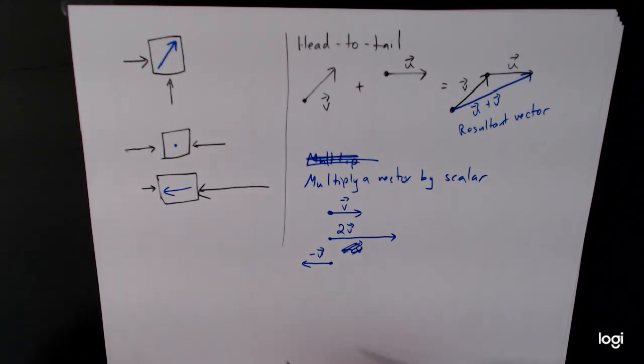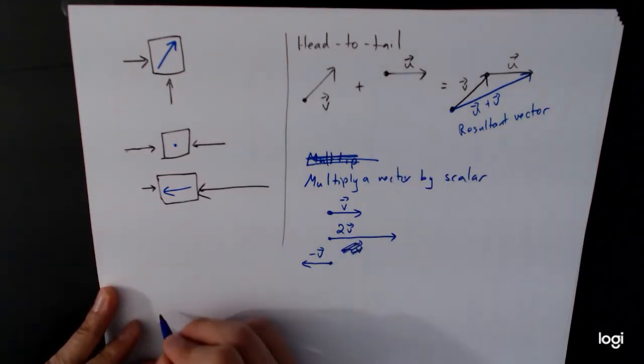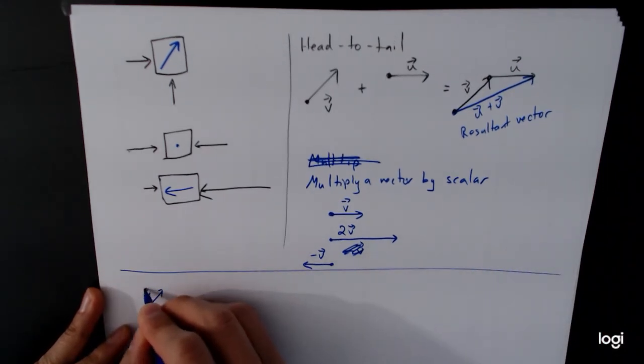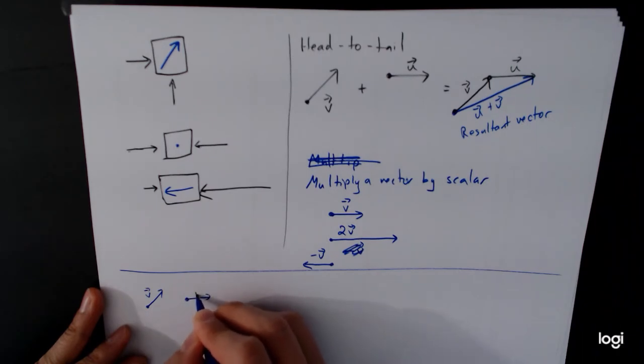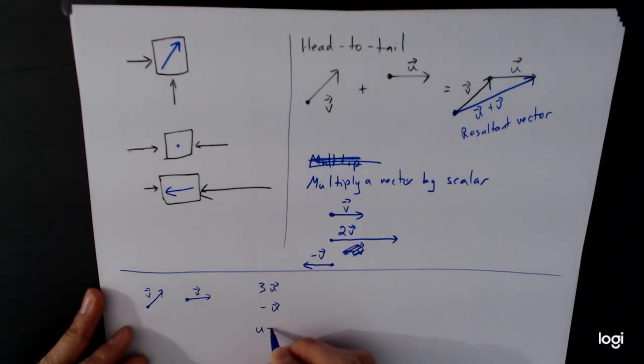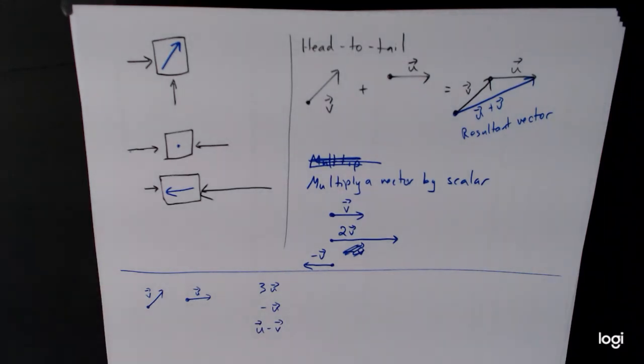So what I want you to do is take a moment and try to do these sums with these two vectors right here. I'll redraw them down here. Here's v and here's u. Take a moment and try to work out what 3u looks like, what negative u looks like, and then what u minus v looks like. Now this last one, I'm going to just tell you to try it and see if you can figure out what's going on. And my hint is, of course, the previous one with the negative u to sort of think about that one. But take a moment and give it a try and see whether you can figure out what these vectors look like.